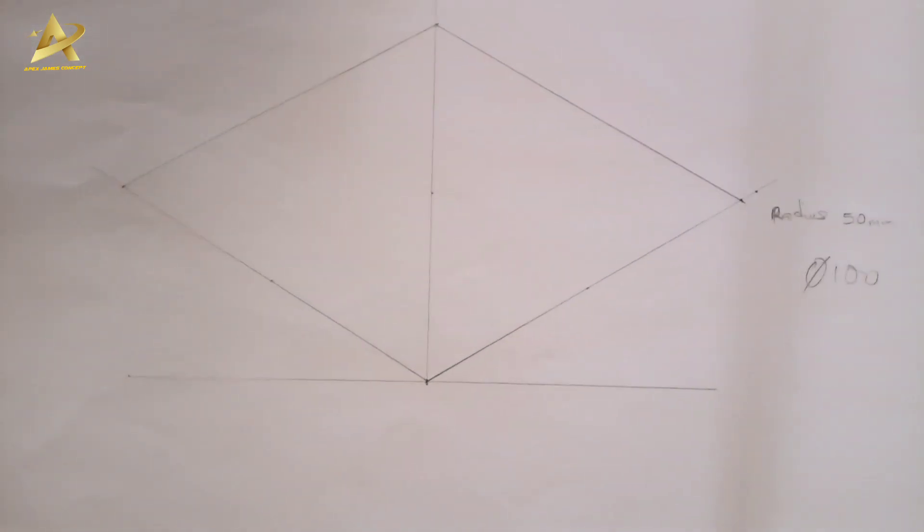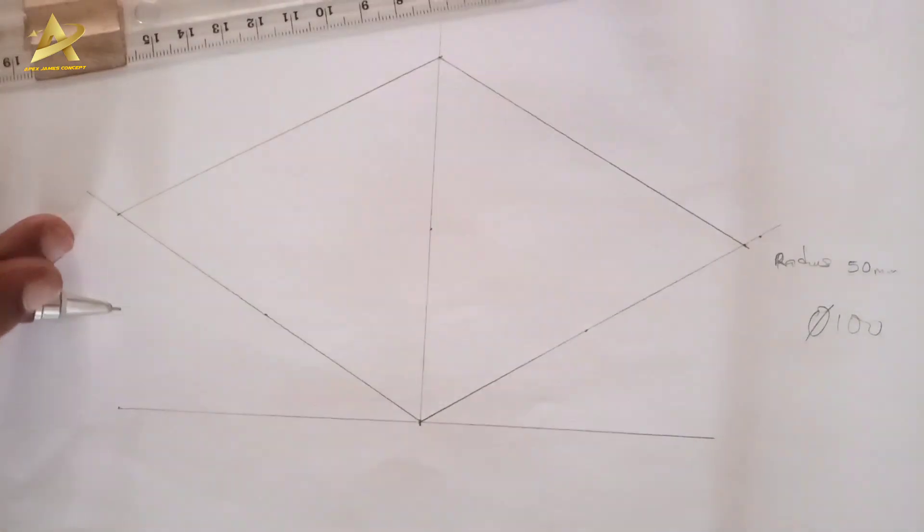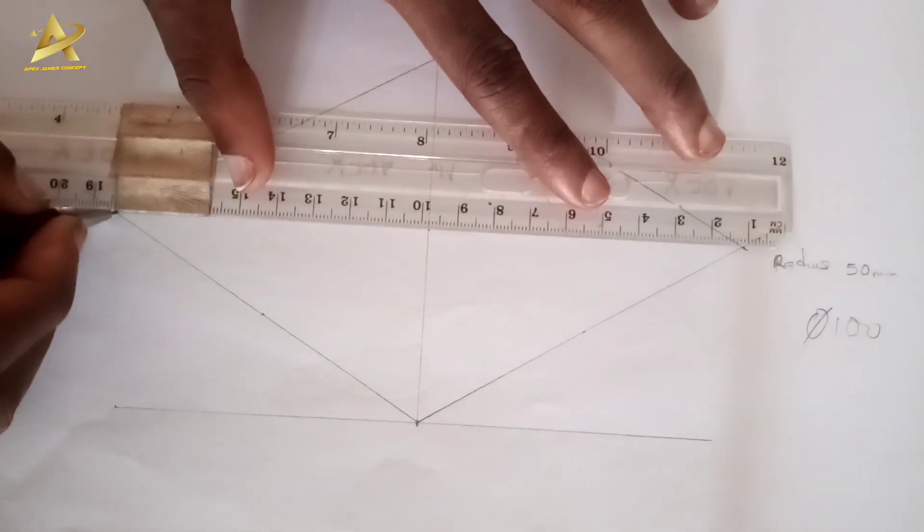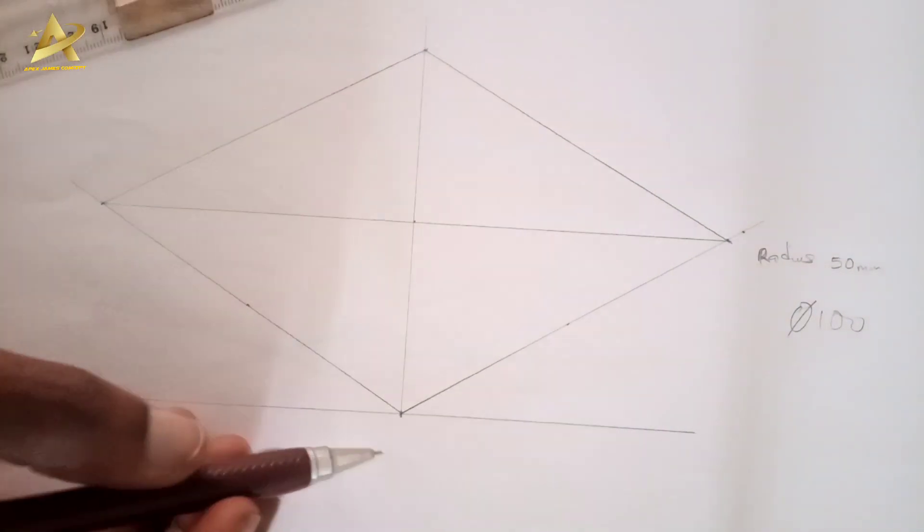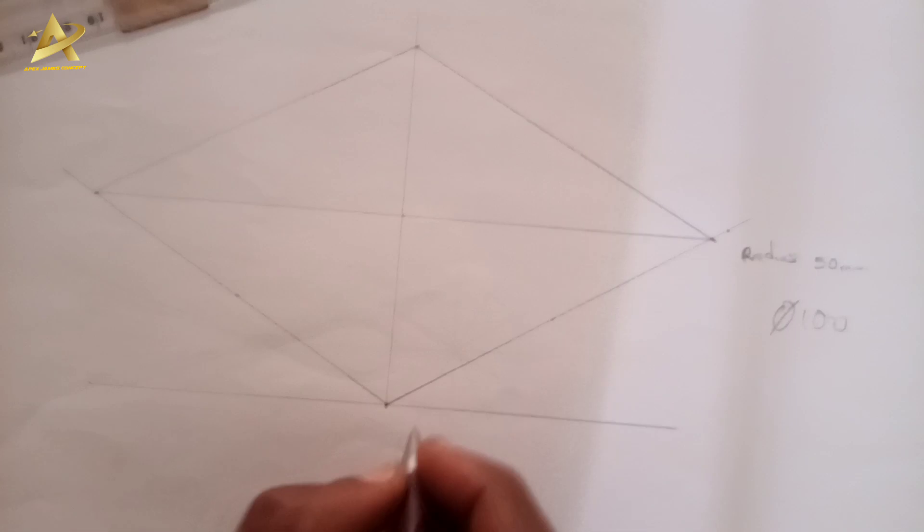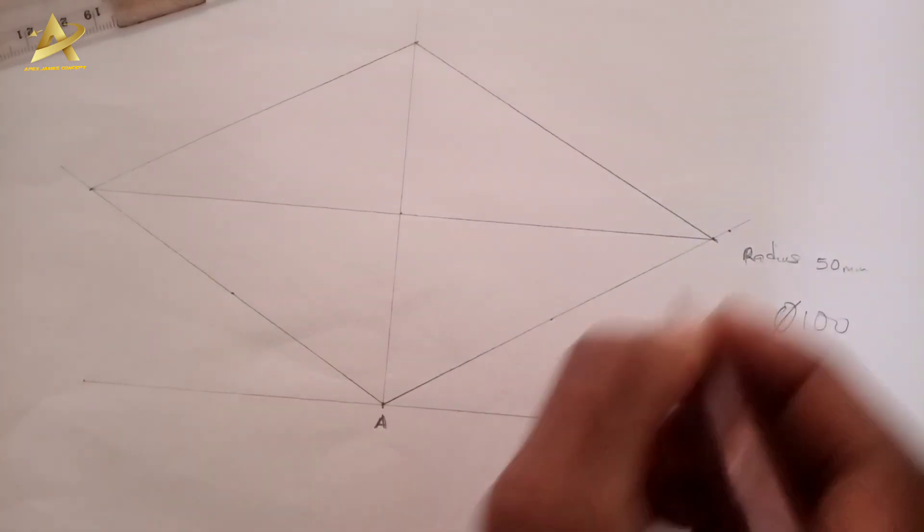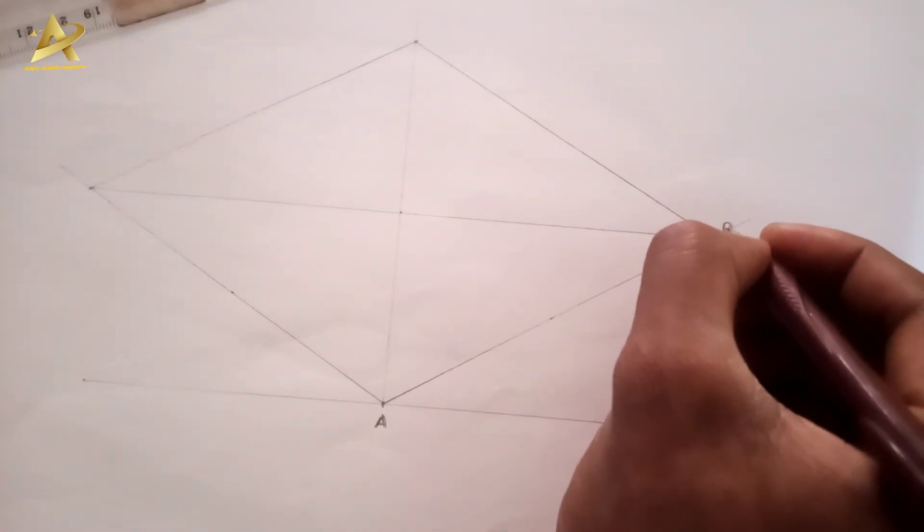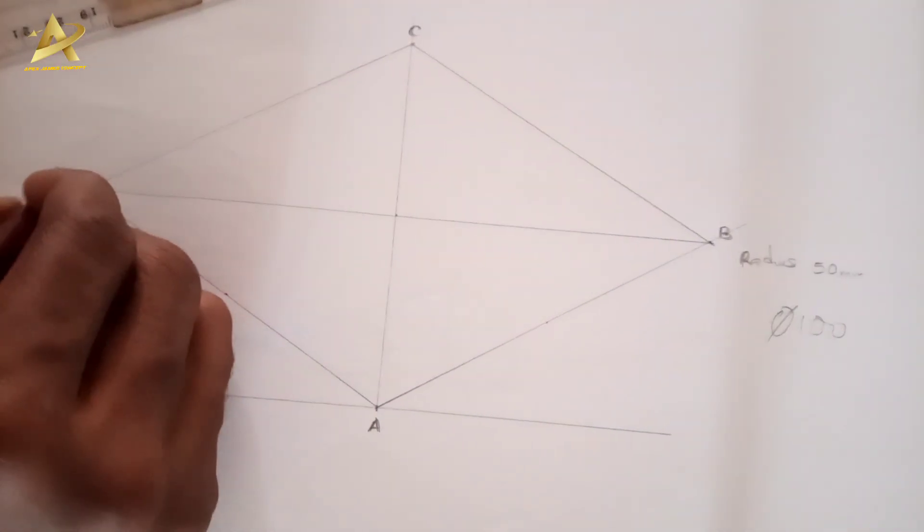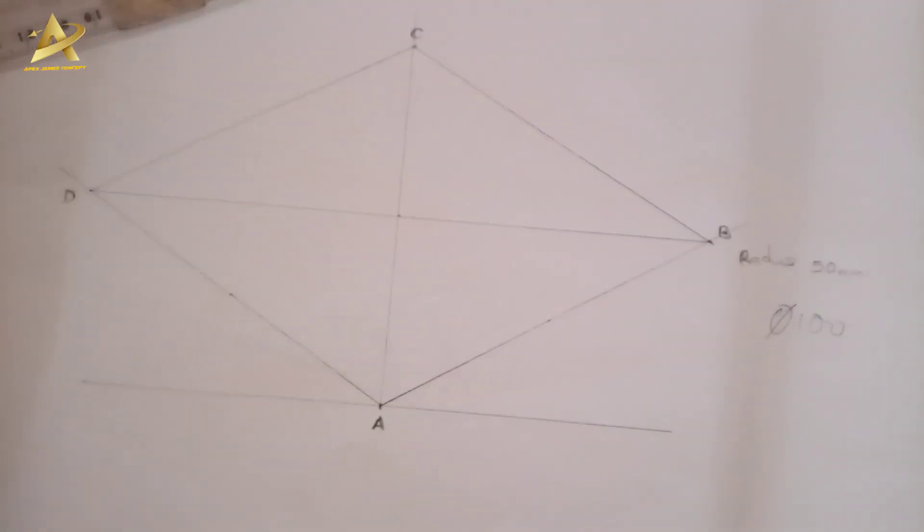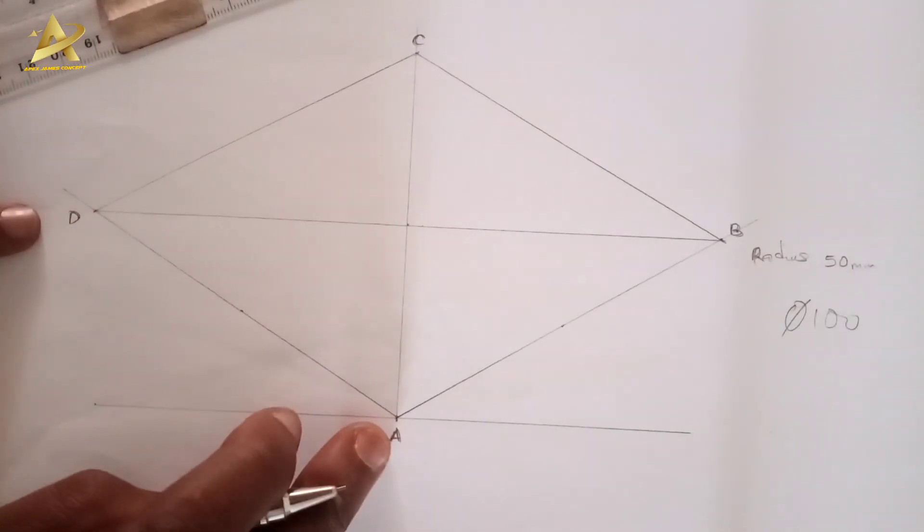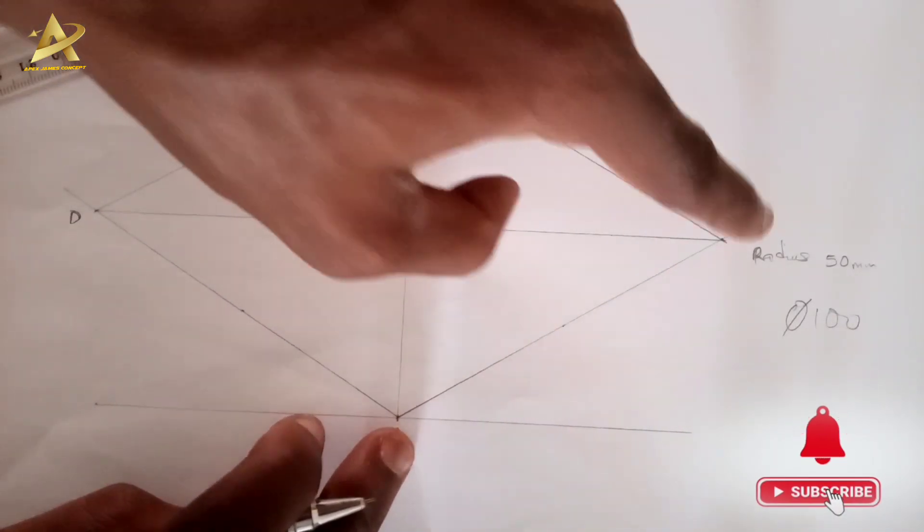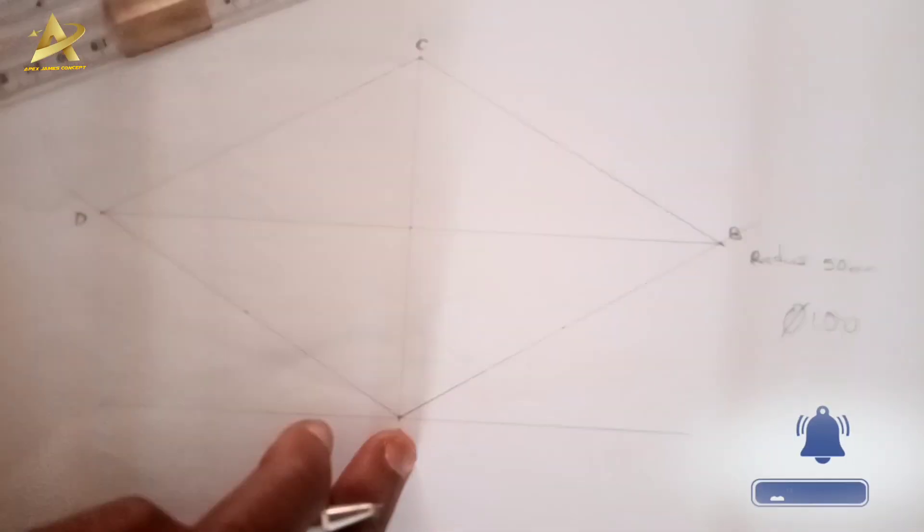After I've gotten this, I'll be drawing the diagonals. I'll divide this distance into two and this distance into two, then I draw a straight line passing to the center.